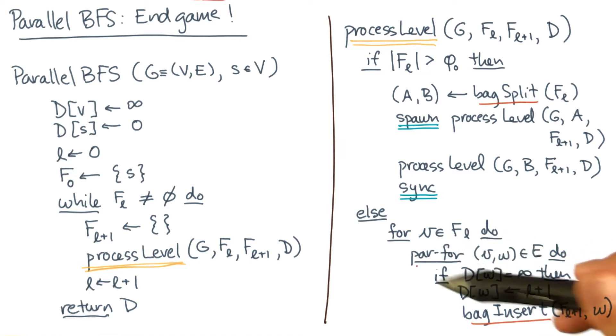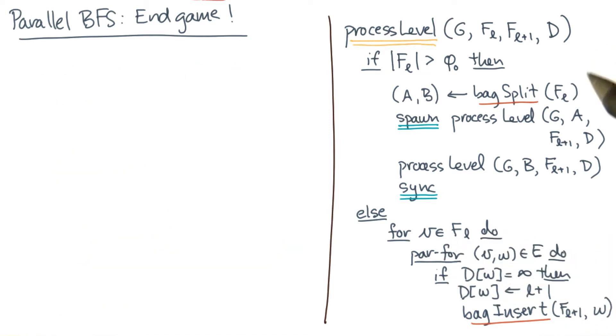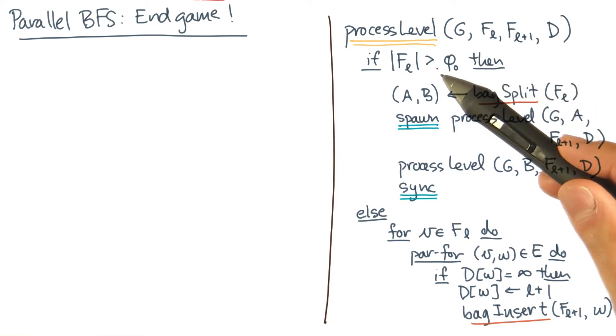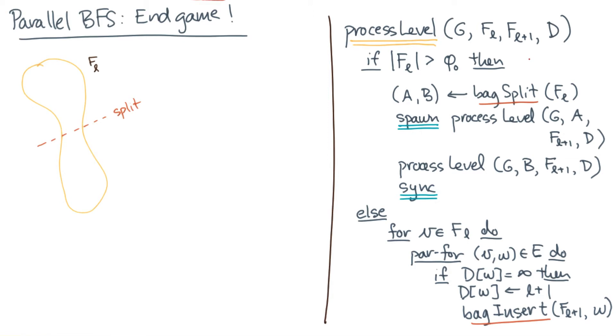Now the one difference is this parallel for loop. So let's see how that works. Given a bag at level L, the first step is to split it if the bag is big enough. Since we can process the elements in any order, we can use divide and conquer on the two halves.